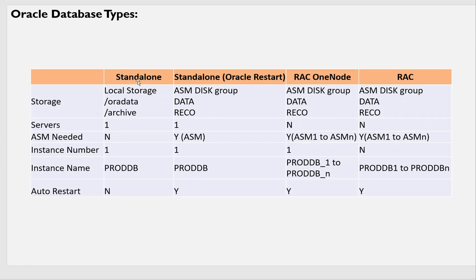It's important to understand the different Oracle offerings. Standalone: this is the normal traditional RDBMS with local or remote storage, NFS, or whatever. Data is stored in different mount points — data, archive, redo logs. It's on one server and ASM is not needed. You'll have only one instance; if the server goes down, the database goes down and you won't be able to access anything.